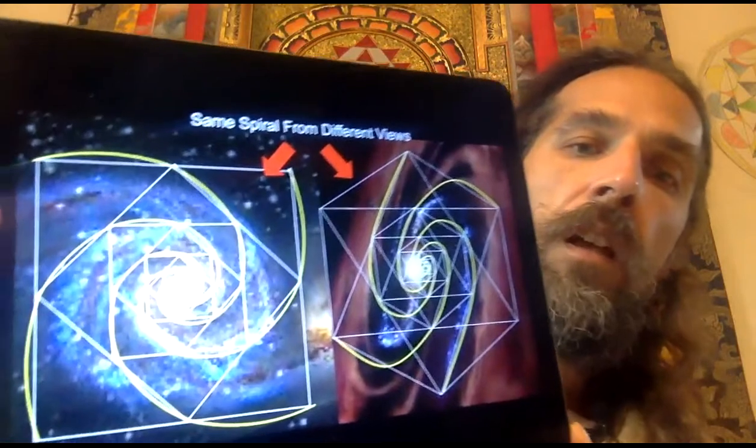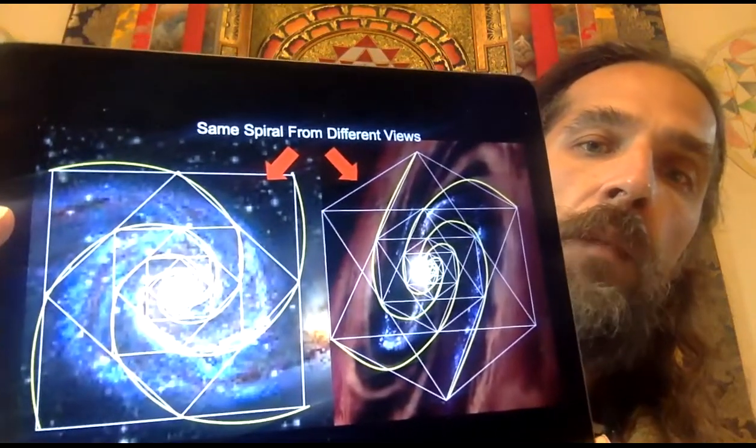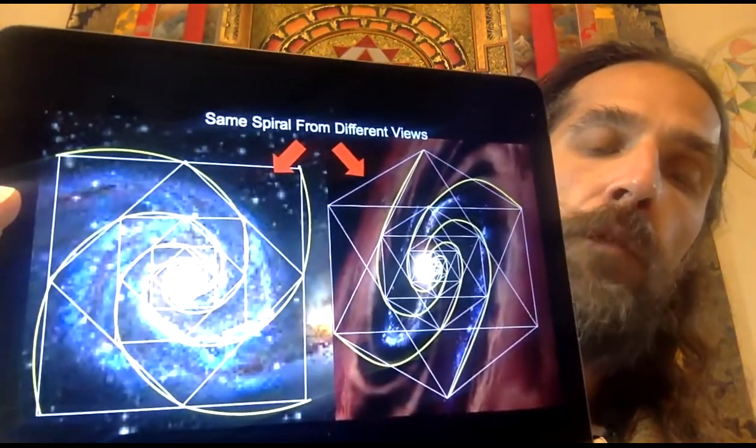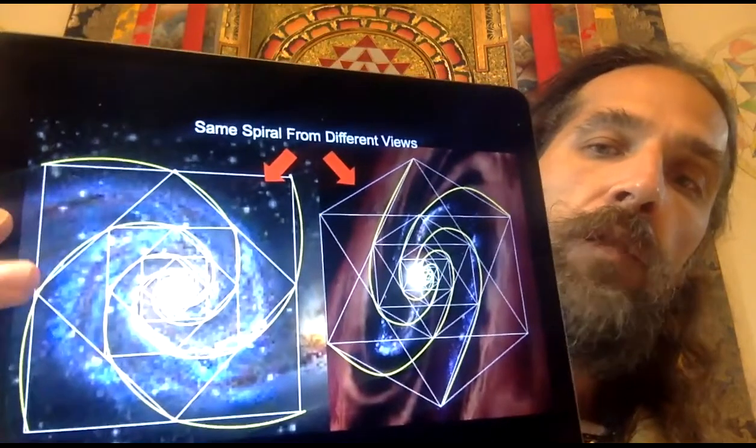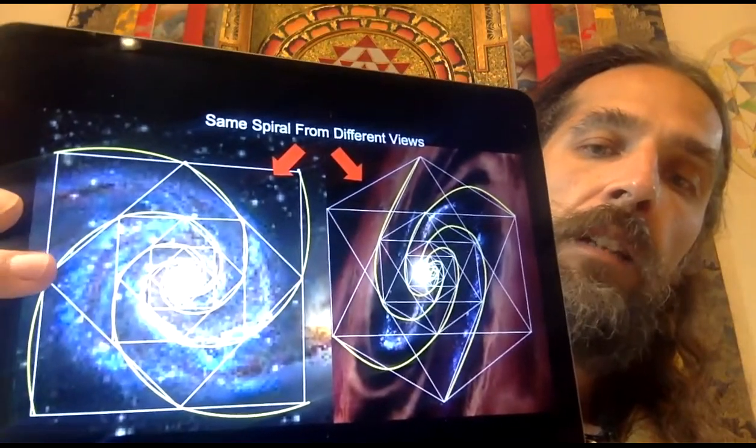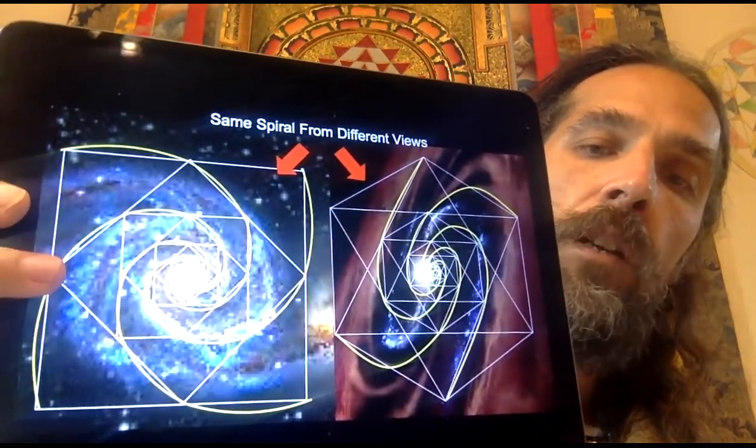This video on the crystal spiral, the same spiral from different views. His video, which I'll show you in a second, is the square view here with the crystal spirals around the galaxy. I think he might have even used the same photograph in that image.